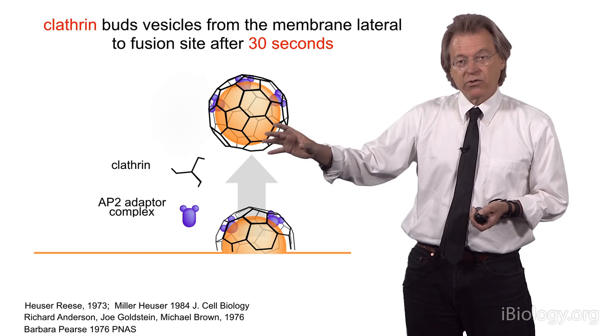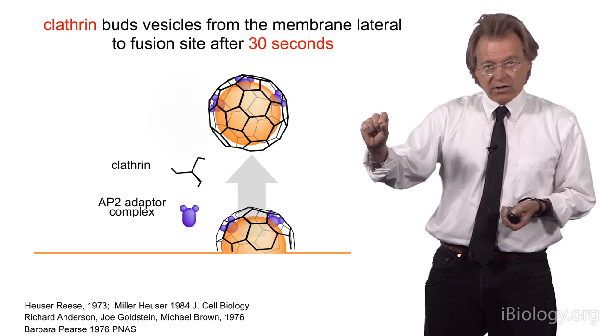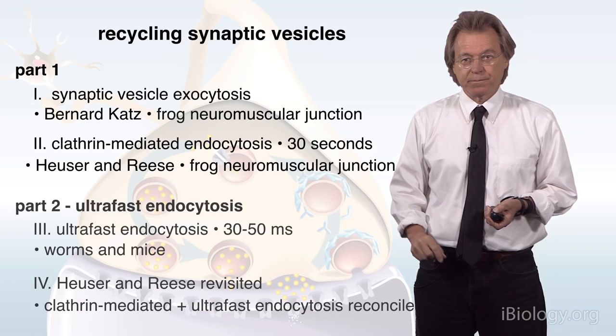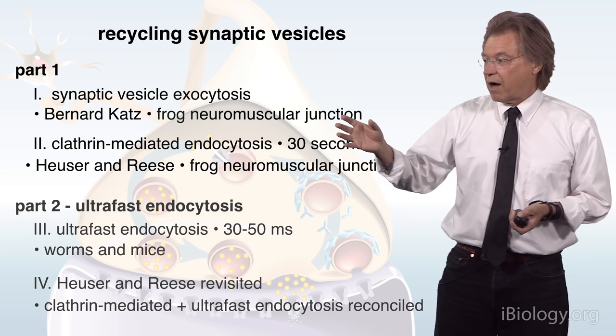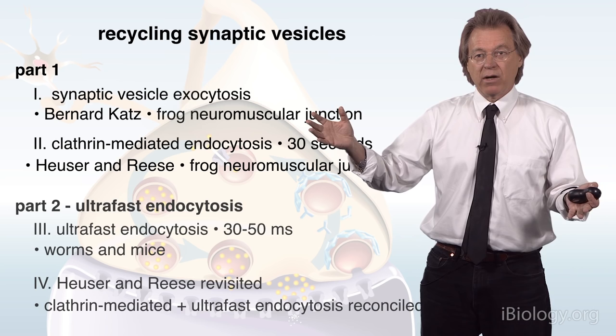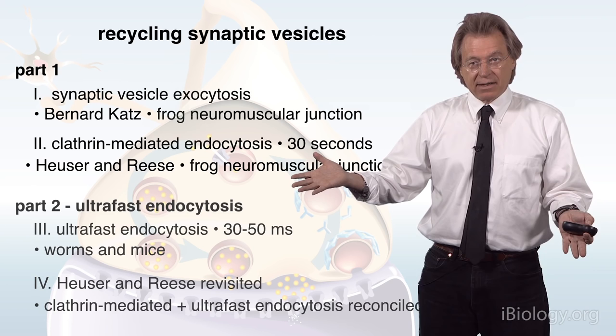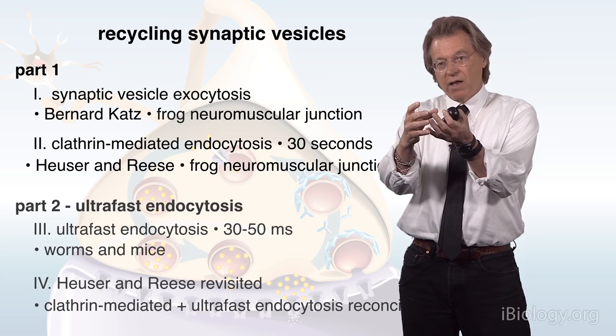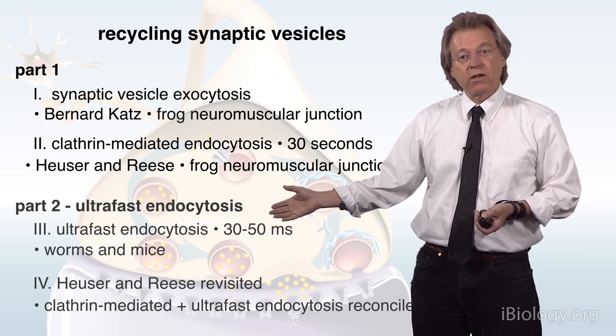The two important conclusions from this video are that synaptic vesicle recycling — endocytosis — occurs via a clathrin-mediated mechanism, and it's rather slow, taking about 30 seconds for these vesicles to be regenerated. I've told you about how synaptic vesicles exocytose, fuse with the plasma membrane, and how we understand that's how a synapse works. Then in the second half I told you how clathrin-mediated endocytosis recovers that membrane and those proteins to regenerate synaptic vesicles. In the second video, I'll tell you about a parallel system that works on a much faster timescale to recycle synaptic vesicles. Thanks for listening, and I encourage you to watch the second video.